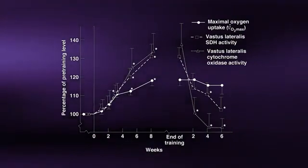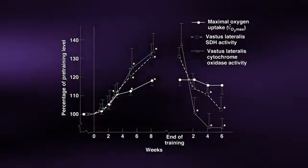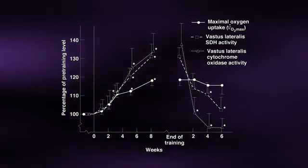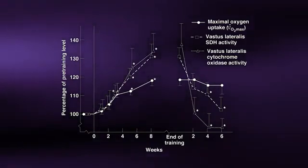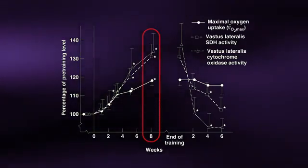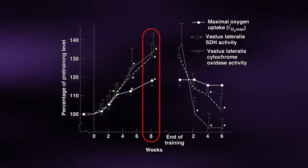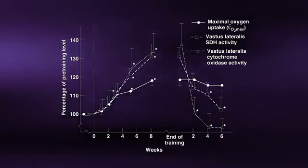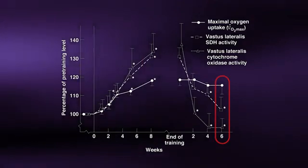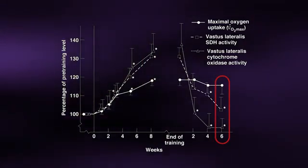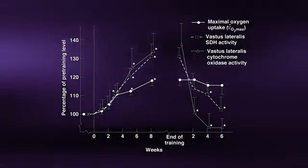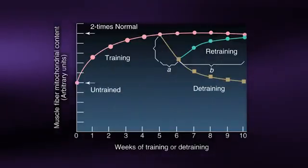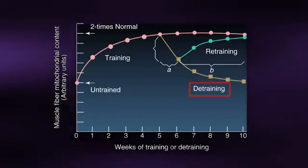Shown here is a classic example of the reversibility principle. Previously sedentary individuals were endurance trained for eight weeks, and the standard markers for endurance training adaptations were measured — including markers of mitochondrial oxidative capacity in the vastus lateralis muscle and maximal oxygen uptake. As per the overload principle, eight weeks of endurance training resulted in increases in all of these variables. However, when these same individuals stopped all training for a period of six weeks, mitochondrial oxidative capacity rapidly returned to pre-training values while maximum oxygen uptake had a more gradual decline. Once the stimulus of regular exercise training has been removed, you will eventually lose any previous training adaptations. Just as rapidly as mitochondrial numbers can increase in previously untrained individuals, detraining will result in a rapid decline to pre-training values.